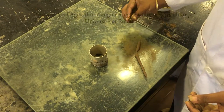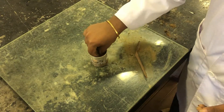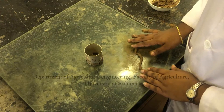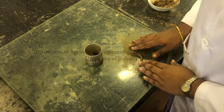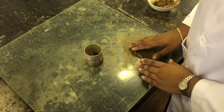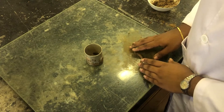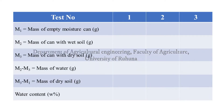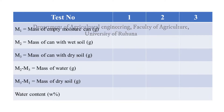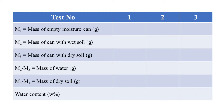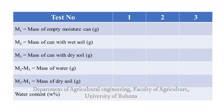Take some of the crumbling material for water content determination. Repeat the previous steps to obtain 3 determinations and take the average moisture content, which is reported as the plastic limit of the particular soil. By taking the average of replicates, we can find the plastic limit of the soil.